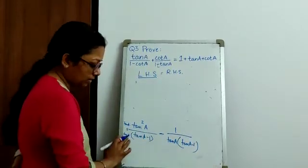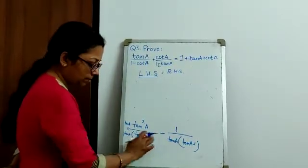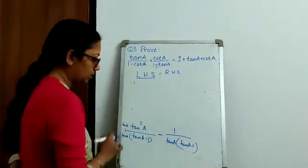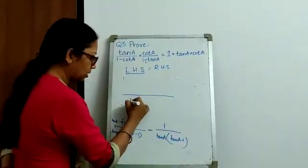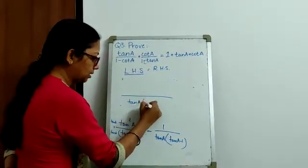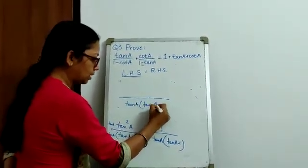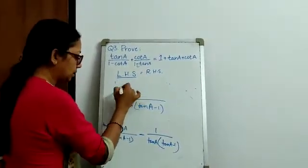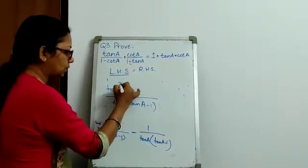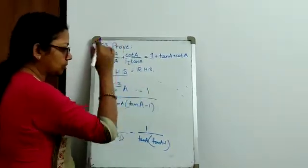So, as you can see, the denominator is now tan A into tan A minus 1. So, my subtraction becomes easy. My denominator, I can write it as tan A into tan A minus 1. And from here, we get tan square A into tan A is tan cube A minus 1.